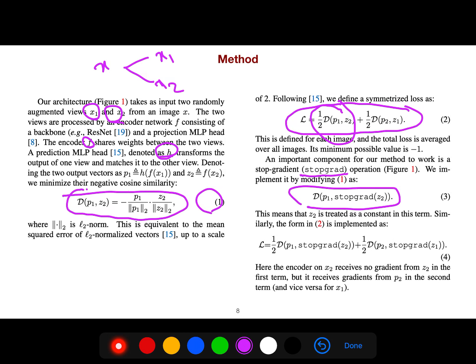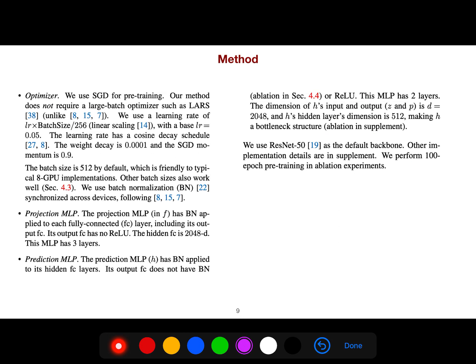And we use SGD for pre-training. Our method does not require a large batch optimizer. We use a learning rate of 0.05, and the weight decay is this.